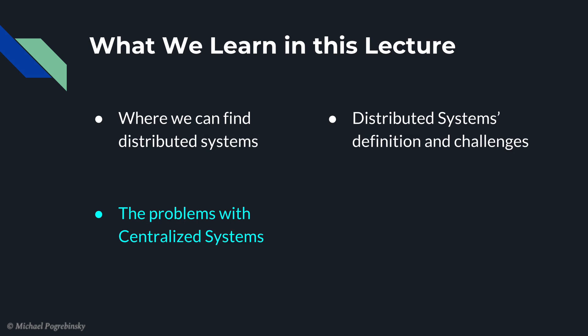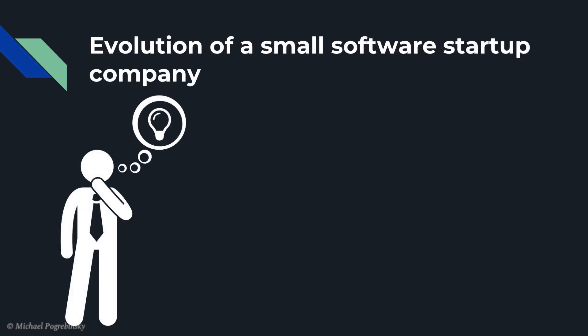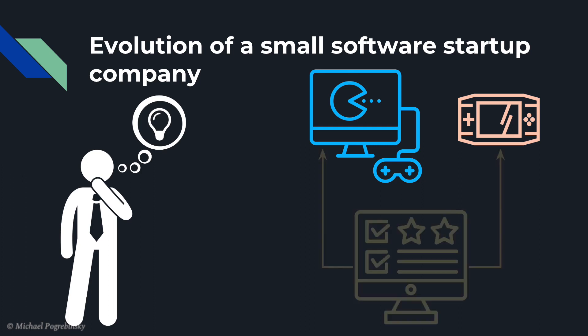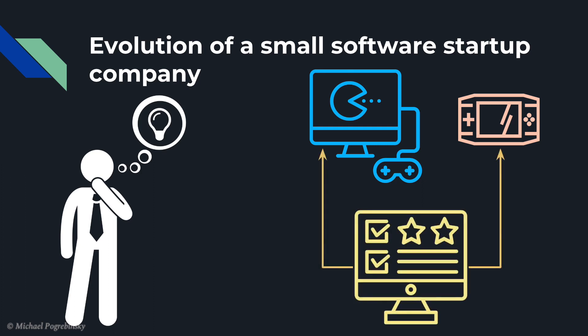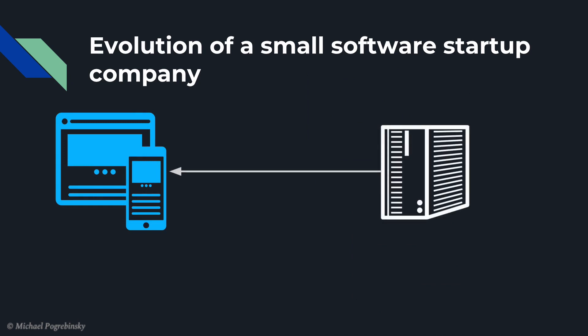What makes distributed systems so appealing? Let's try to understand it by analyzing a centralized system, which is the opposite of a distributed system, first. Let's say we have a startup idea and we want to reach our users through a website or an app — for example, we want to create a new online shopping experience where people can buy computer or video games and share reviews on those purchases with their friends. So we go ahead and build an awesome-looking website and a sleek mobile app and decide to host a web server on a spare computer we have in our garage.